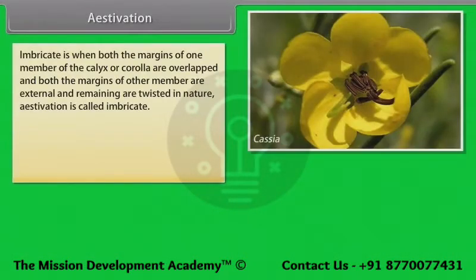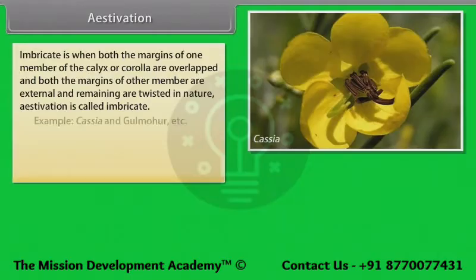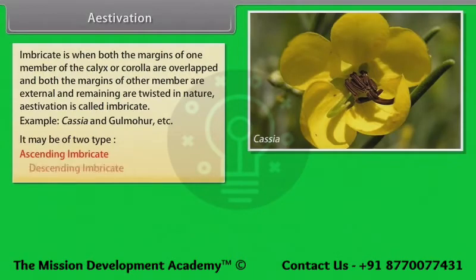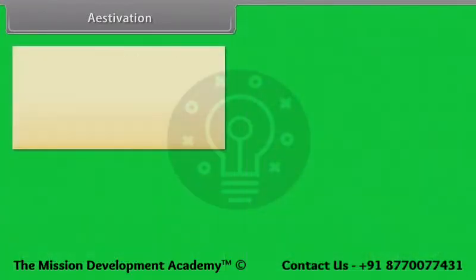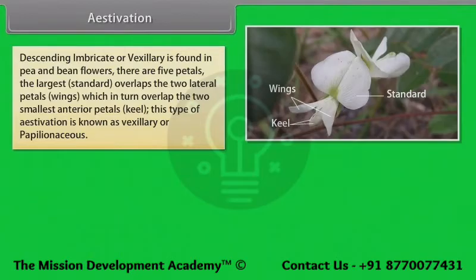Imbricate estivation is when both the margins of one member of calyx or corolla are overlapped, both the margins of another member are external, and the remaining are twisted in nature. Example: Cassia, Gulmohar. It may be of two types — Ascending imbricate, where the posterior member is internal and overlapped by lateral members which are in turn overlapped by anterior members (example Caesalpinia), and Descending imbricate or Vexillary, found in pea and bean, where the largest standard overlaps two wing petals which overlap the two smallest keel petals.